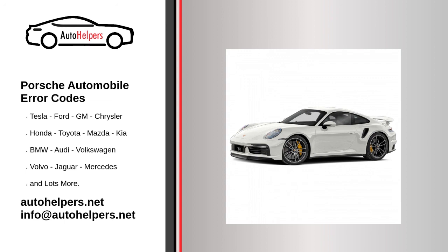Code P0705: Defective transmission range sensor (PRNDL input). Defective transmission range sensor wiring or connector. Defective valve body. Defective manual shift valve linkage. Dirty transmission fluid that restricts the hydraulic passages.